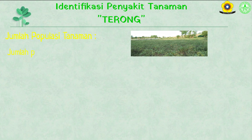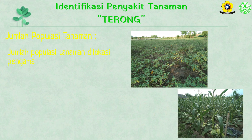Jumlah populasi tanaman di lokasi pengamatan keseluruhan sebanyak 60 batang. Tanaman terong sudah memasuki fase berbuah matang dan dari keseluruhan tanaman hampir 50% terserang penyakit dan hama. Hal tersebut dapat dilihat dari kondisi daun yang menguning dan buah yang banyak terdapat bercak.